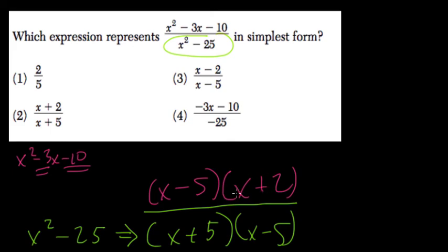We're done. So here, we do a little bit of canceling out. The x minus 5 is canceled out. We're left with the answer x plus 2 over x plus 5. Choice 2.